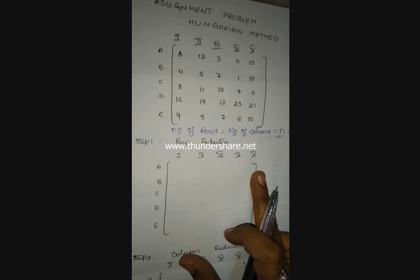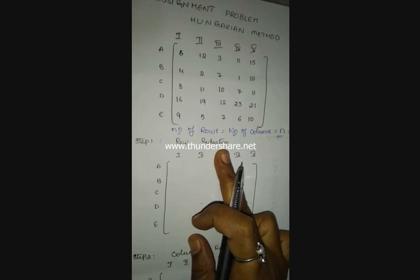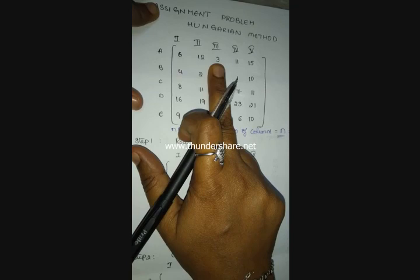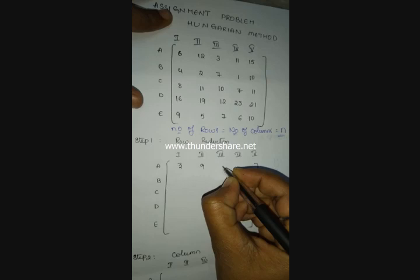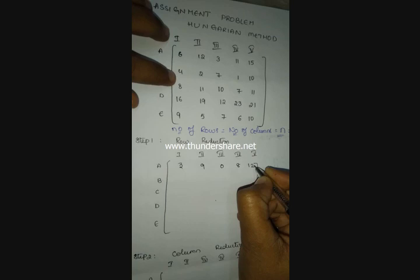The first step is row reduction. For the first row, choose the minimum element, which is three. So: six minus three is three, twelve minus three is nine, three minus three is zero, eleven minus three is eight, and fifteen minus three is twelve.